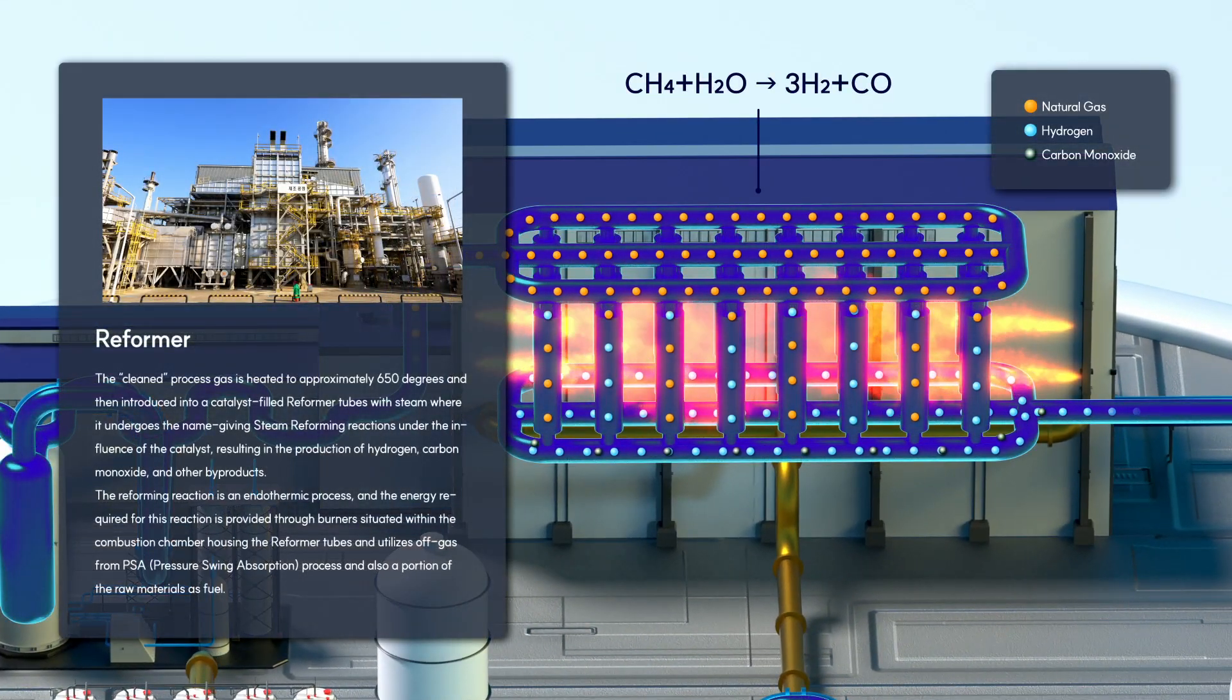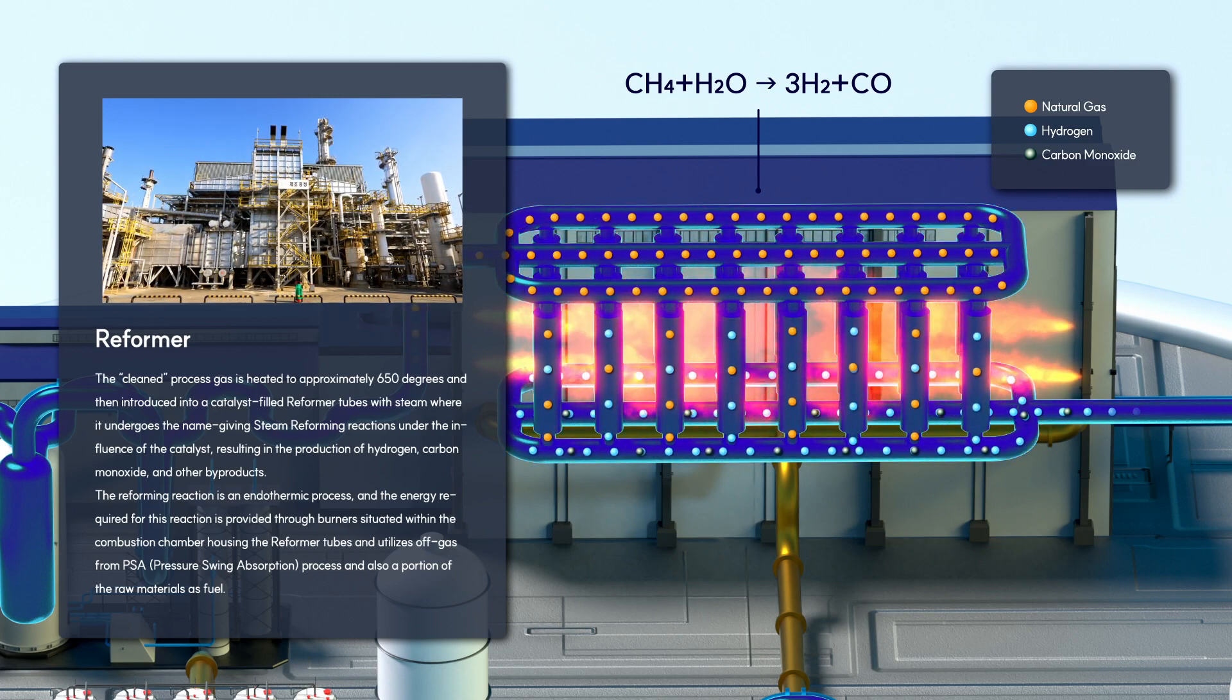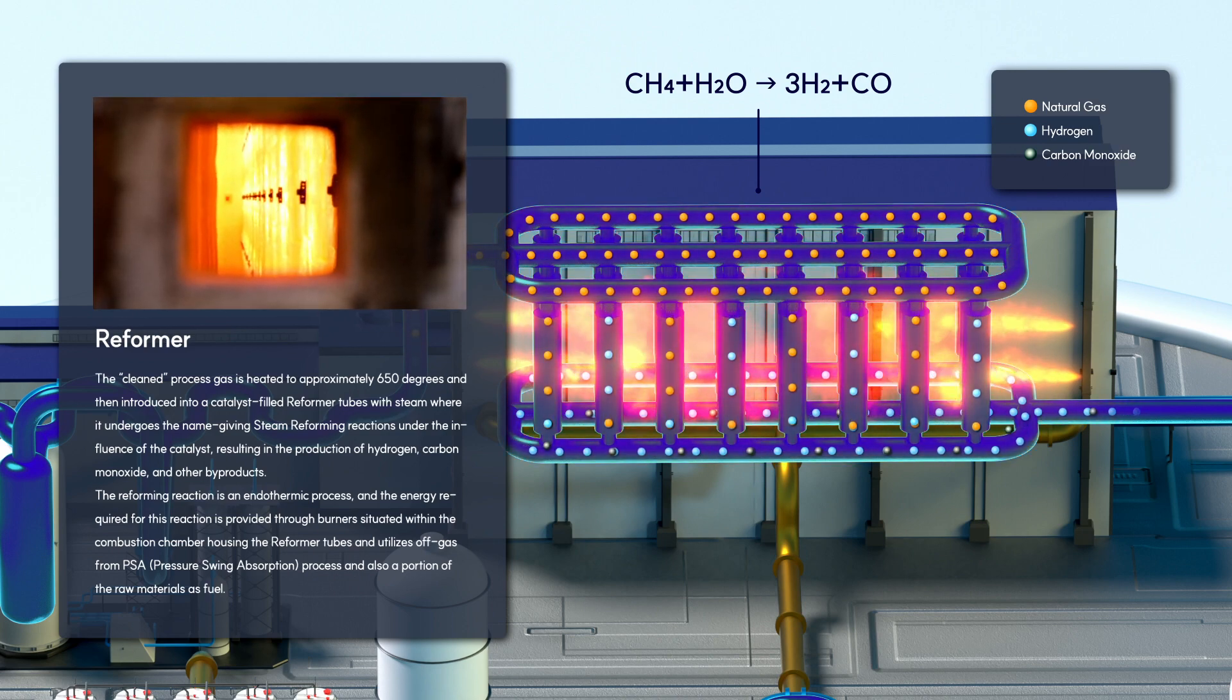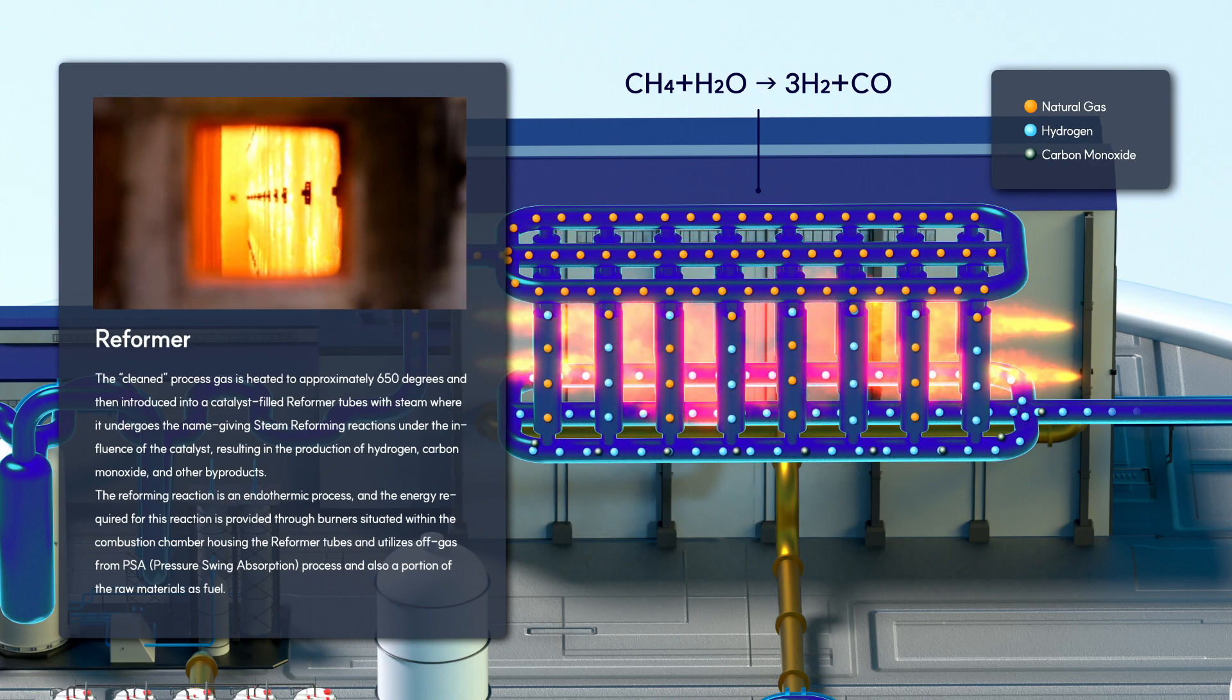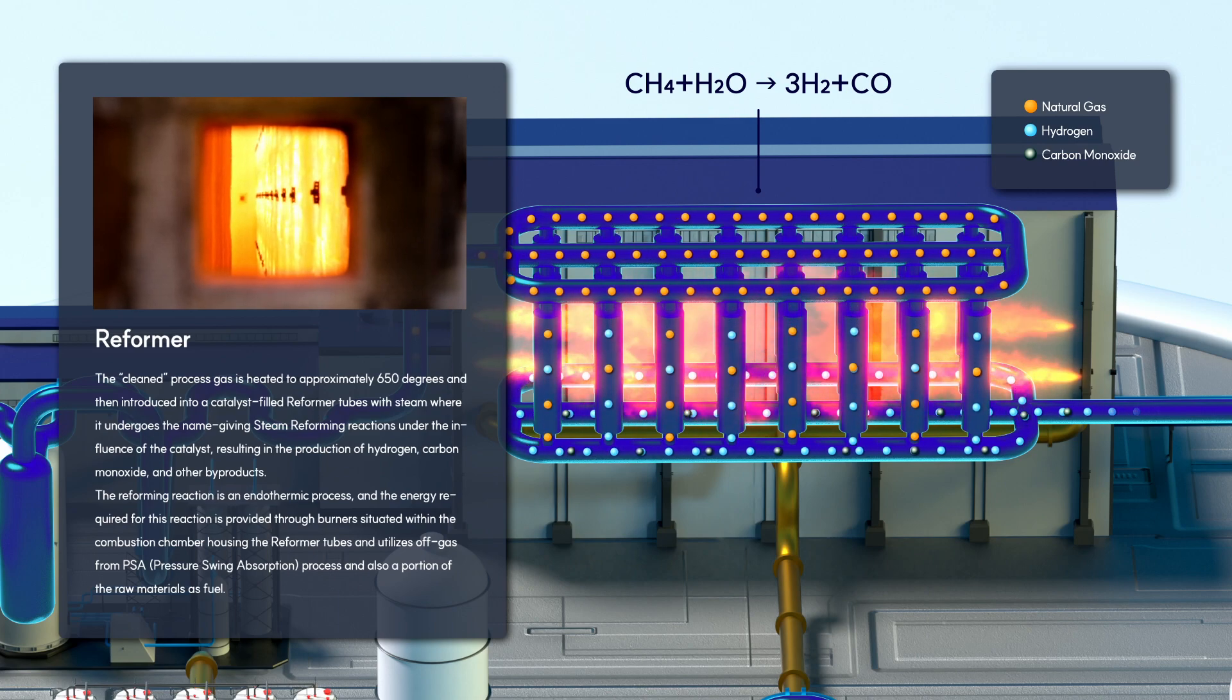The reforming reaction is endothermic, and the energy required is provided through burners situated within the combustion chamber housing the reformer tubes, utilizing off-gas from the PSA process and a portion of the raw material as fuel.